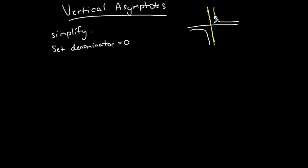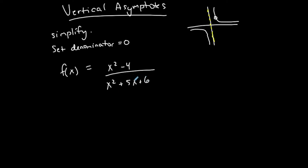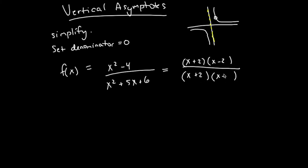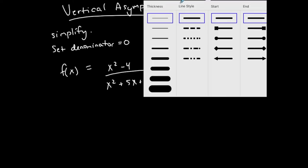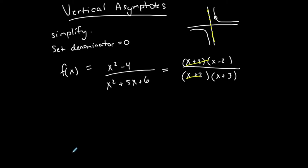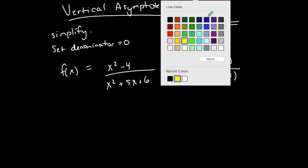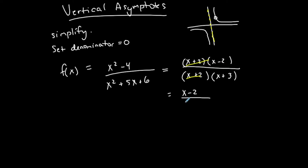That's also a value that does not go into the domain. That happens when you have, for example, x squared minus 4 over x squared plus 5x plus 6. This is an example of a rational function unsimplified. To simplify it, I'm going to factor the top and factor the bottom. When I factor the top and factor the bottom, you'll notice that I have a repeated expression on the top and on the bottom: x plus 2. The expression is removed from the function, and it simplifies into x minus 2 over x plus 3.